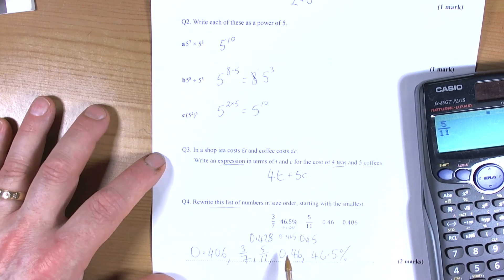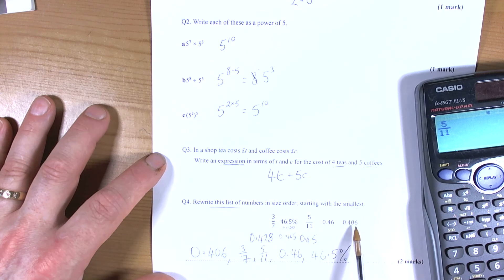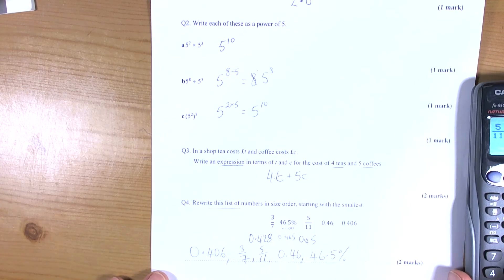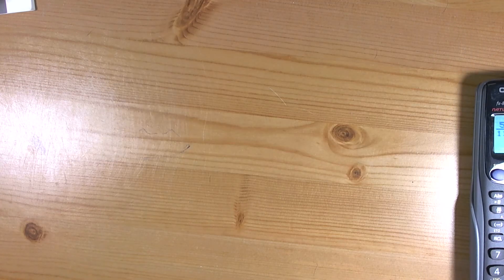OK. So just checking place values. And because they all have 4 in the tenths column, then we have to look at the hundredths. That had 0 hundredths, so it had to be the smallest. Because those had 6 hundredths and 5 hundredths and so on. So those are a few questions.